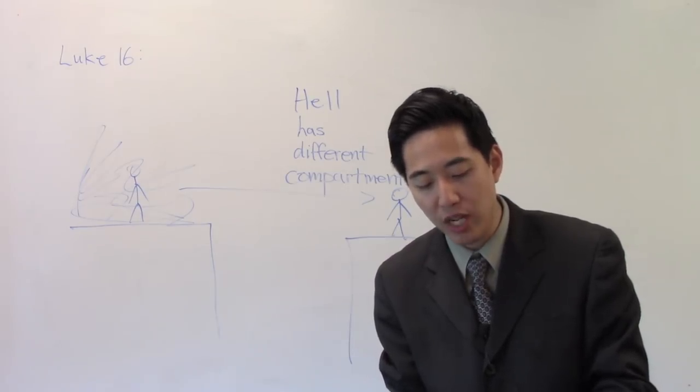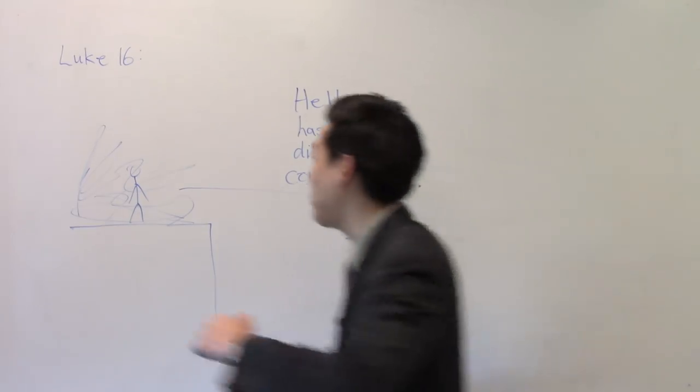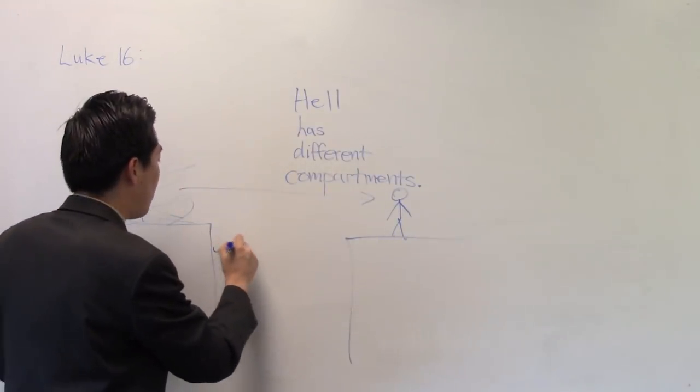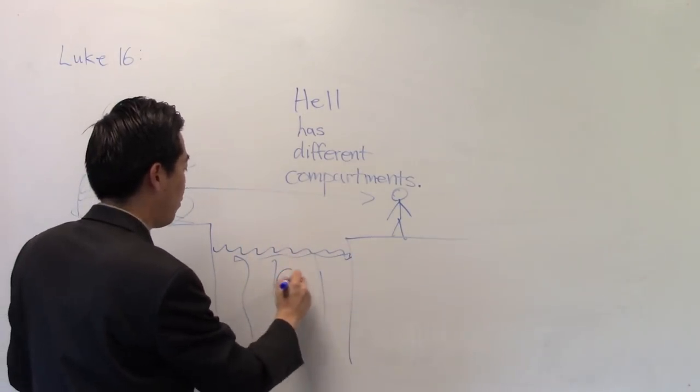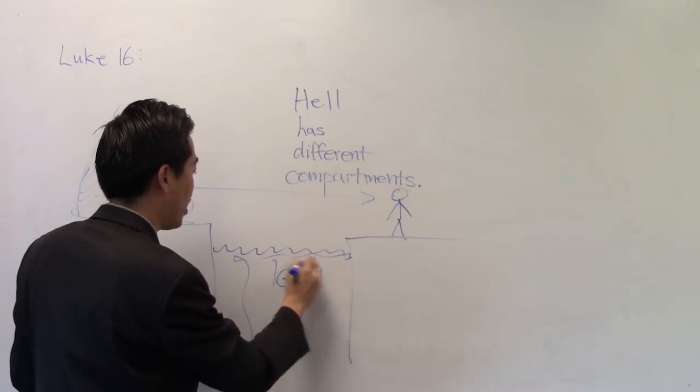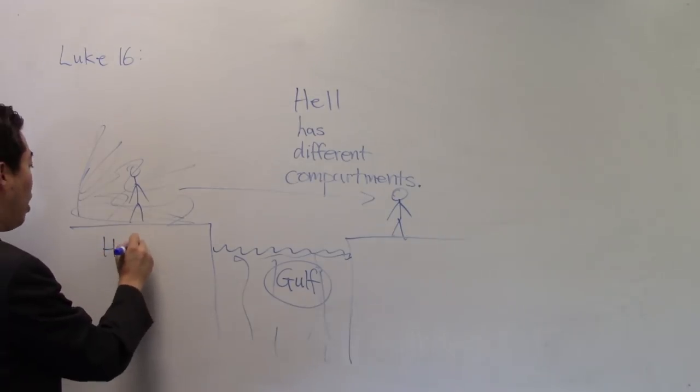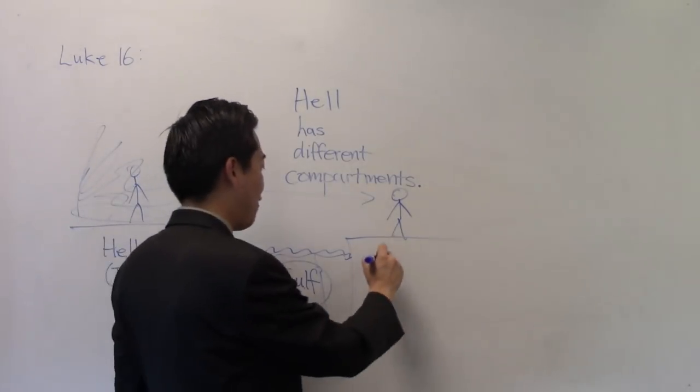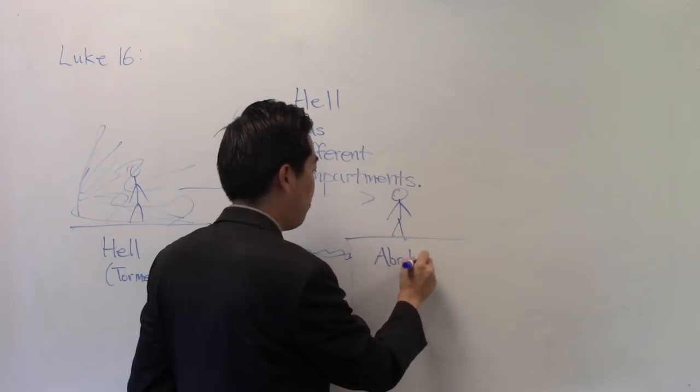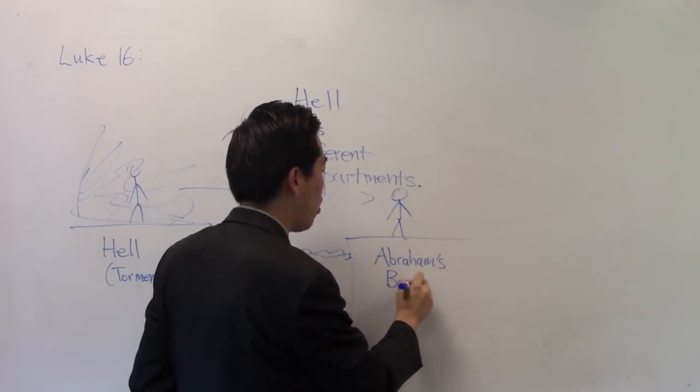But look at verse 26. That's even more plain. And beside all this, between us and you, there is a what? Great gulf fixed. See, they're in the same location, but in different compartments. See that? So this is the gulf. This is the gulf right here. So we already have a place, hell, torment, where lost people go and burn. Then you have a place of comfort. This is Abraham's bosom. But it has a different name as well. It's also called paradise.